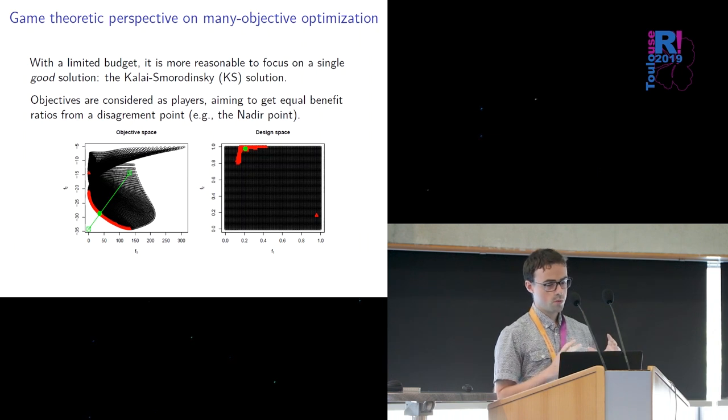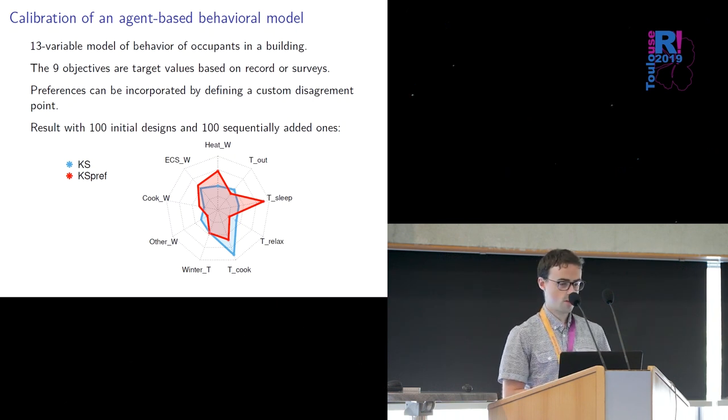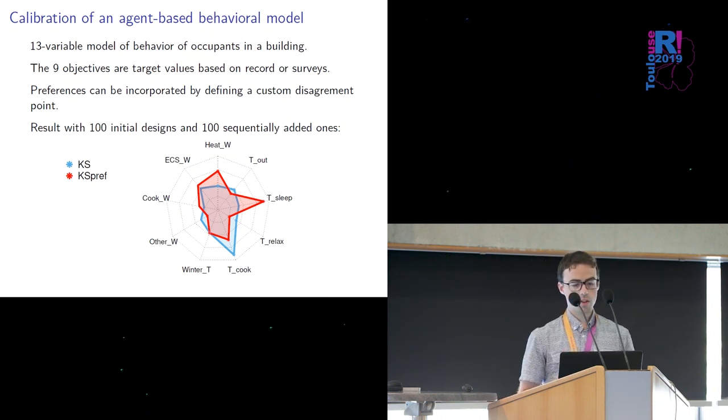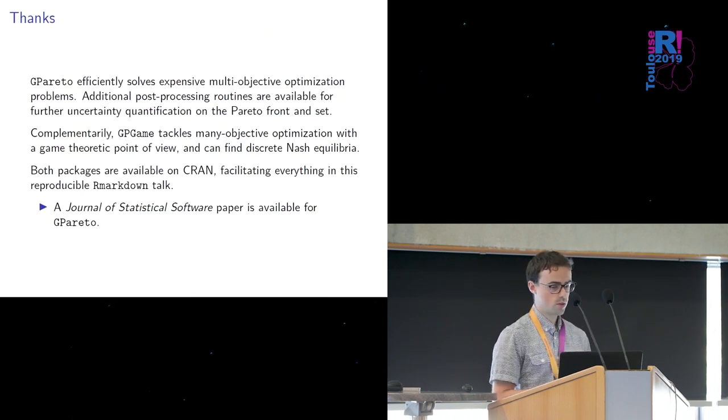And here is a calibration problem so there are 13 variables nine objectives that are the target values and different types of responses and we want to optimize those based on data that we have and on a simulator that takes 30 minutes to run. And so the result is at the bottom where we see that we improve most of the objectives and if you want to specify one more you can actually do it with preferences. So I'll try to show you that you can solve expensive multi-objective optimization problem with GPareto you can do it also for many objectives with GPgame you can actually solve Nash equilibrium problems and there is a lot of examples on for these current packages and there is a Journal of Statistical Software for GPareto thank you.